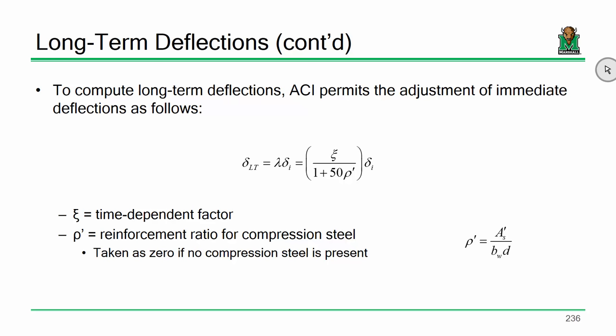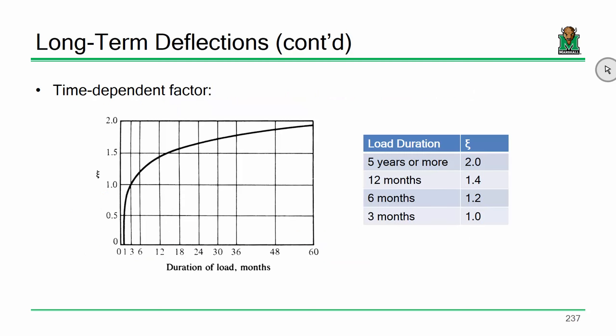We know how to compute immediate live load deflection, but we also need to know how to compute total long-term deflection. When it comes to dead load, that load is always going to be there, so our load modification is based on infinite duration. For long-term effects, it's a function of duration and how much of that live load is sustained. We can also incorporate reinforcement ratios for compression steel — if you have compression steel, it will only give you a benefit.